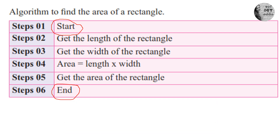The second step is 'Get the length of the rectangle' and the third step is 'Get the width of the rectangle.' When we are going to find the area of a rectangle, we need the length and the width — so we take these as inputs. In mathematics you learned that area equals length multiplied by width.